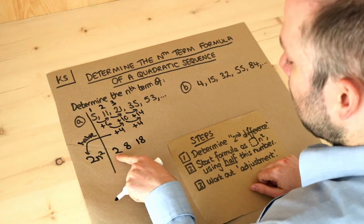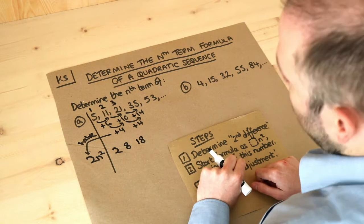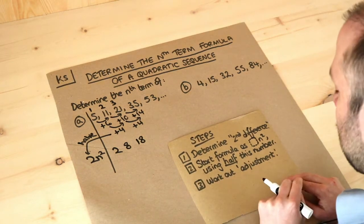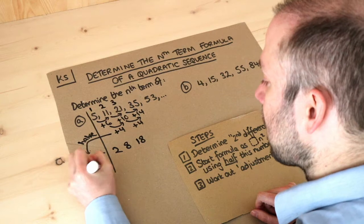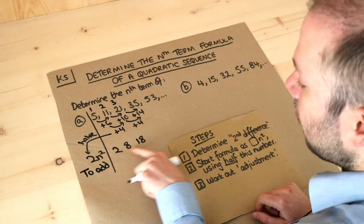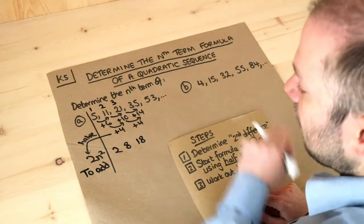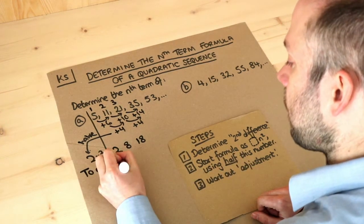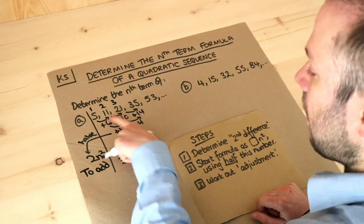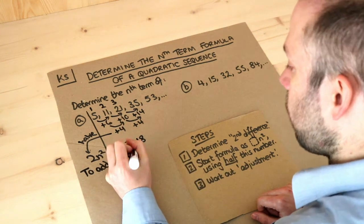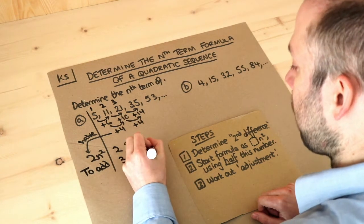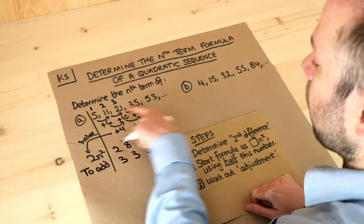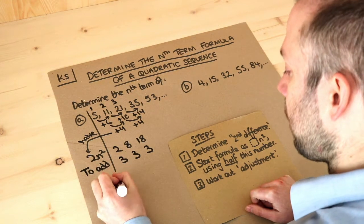We can see 2n² gives us 2, 8, 18 — but we want 5, 11, 21, so we need an adjustment. I'll add a row to work out what to add. To get from 2 to 5 we add 3, from 8 to 11 we add 3, and from 18 to 21 we add 3. So we add 3 each time.